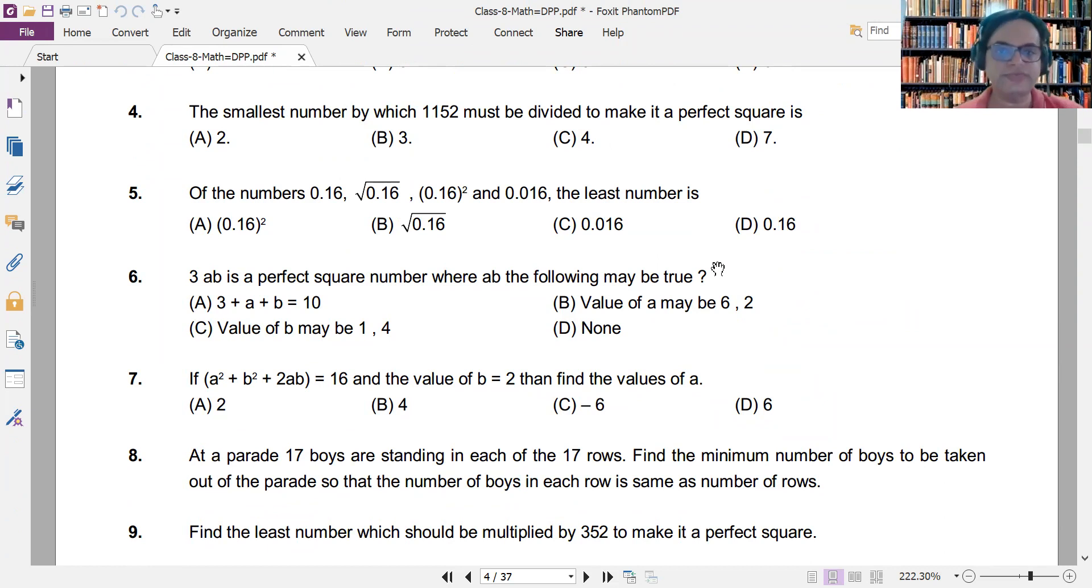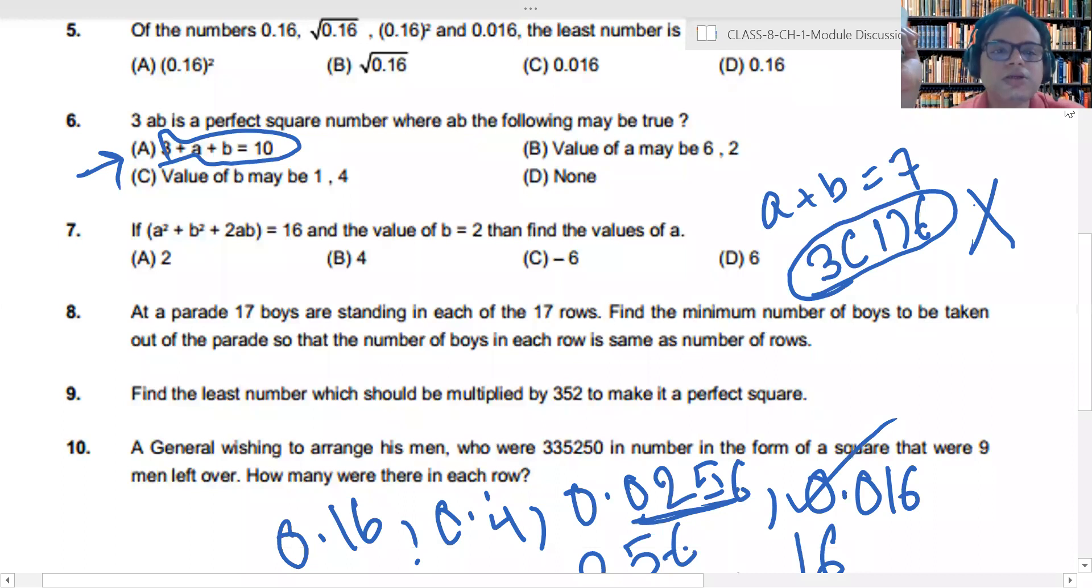Wait, wait, wait. There is issue, there is issue. Three plus A plus B will be equal to ten. That means A plus B will be equal to seven. Now, if A plus B is equal to seven, what I have done? I have taken the value of A as one and B as six.